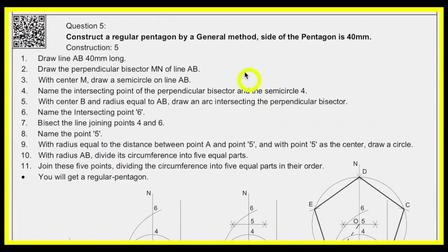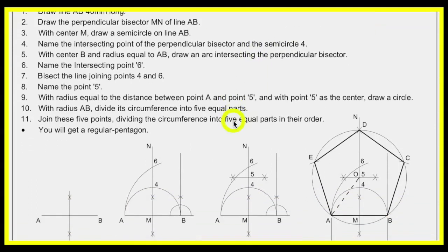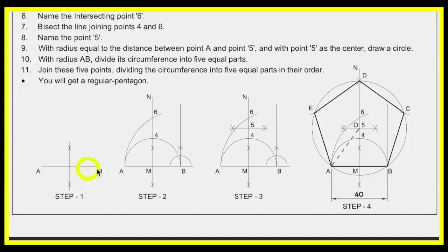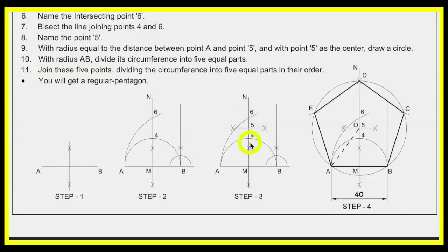There is one more general method: when the side is given, how will you draw any polygon? For pentagon, first draw line AB, then bisect it and draw a semicircle. From B to A draw an arc — that will be point 6. Then bisect points 4 and 6 to get point 5. From point 5 to A, draw a circle and cut side 4.